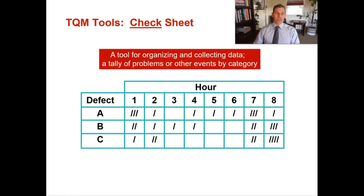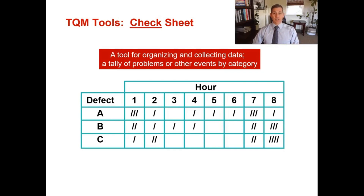Our very first TQM tool is a check sheet. A check sheet is a tool for organizing and collecting data. It helps us take a tally of problems or other events by category, which helps us to generate ideas. It doesn't tell us what the problem is, but it tells us where to look. It's a simple tool for problem identification.